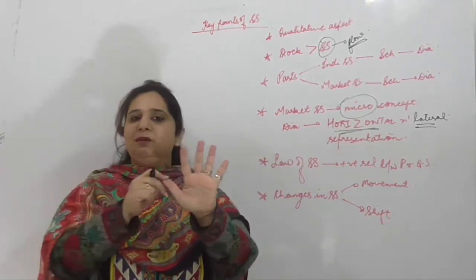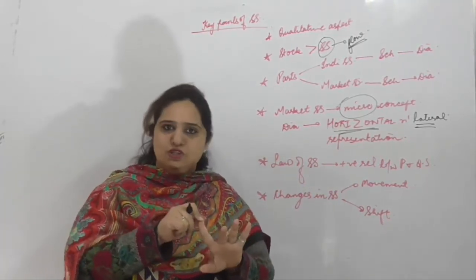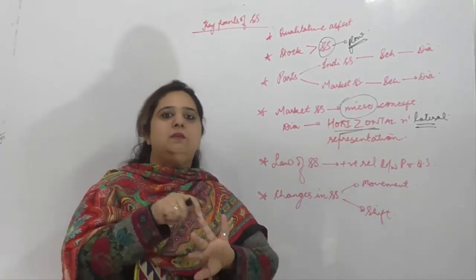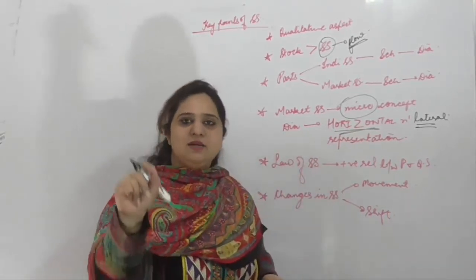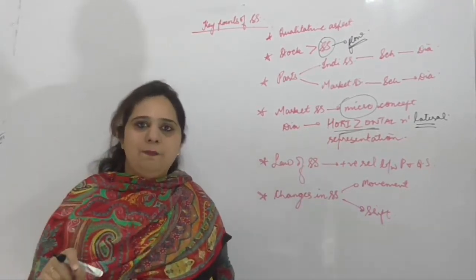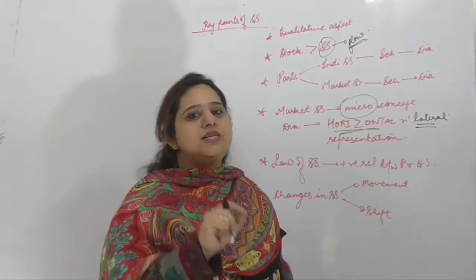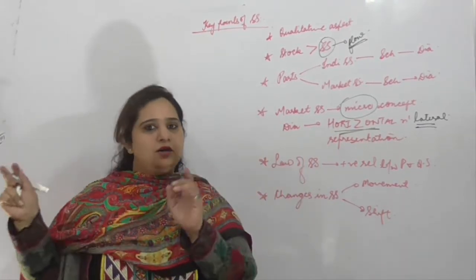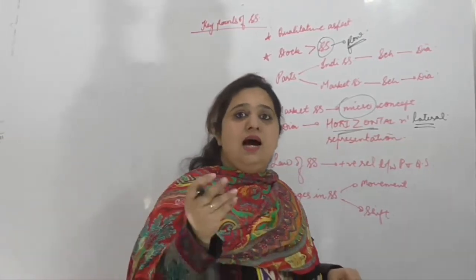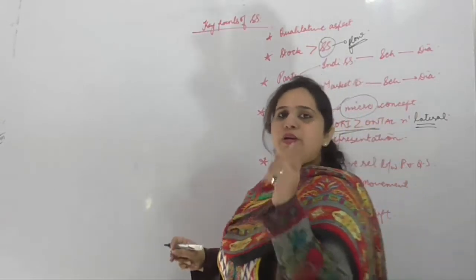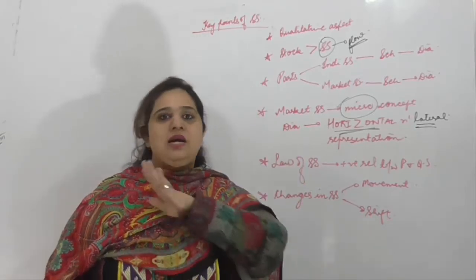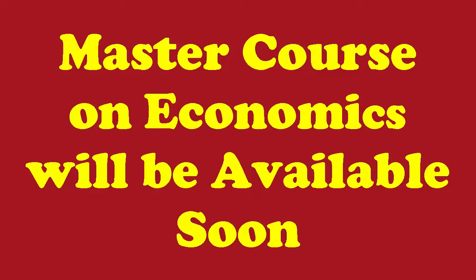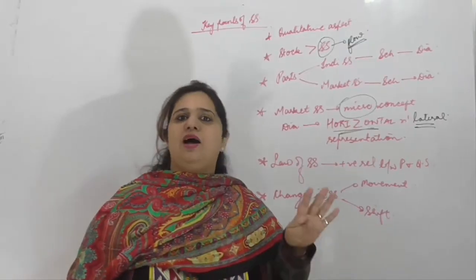Law of Supply को explain करने के कितने steps होते हैं? Five. सबसे पहले meaning, फिर assumptions, फिर schedule, फिर diagram, और फिर explanation. Law of Supply states that there is a positive relationship between the price of a commodity and the quantity supplied of a commodity — other things remaining constant।